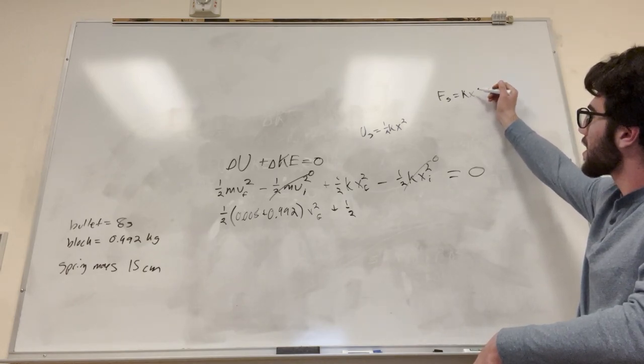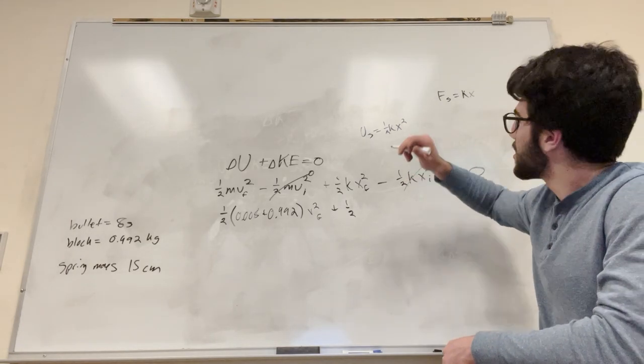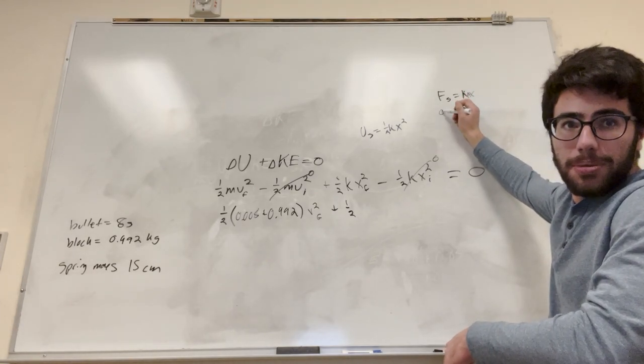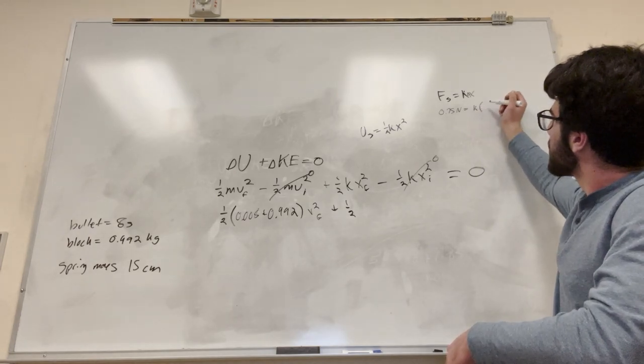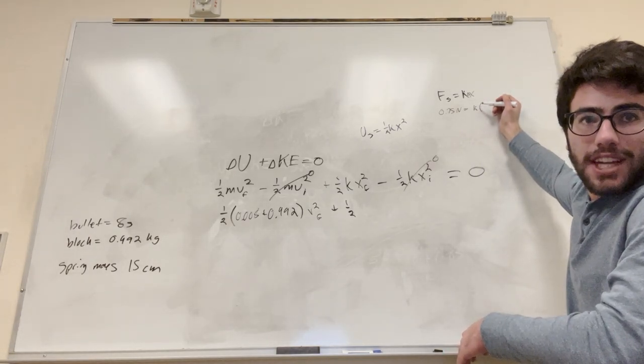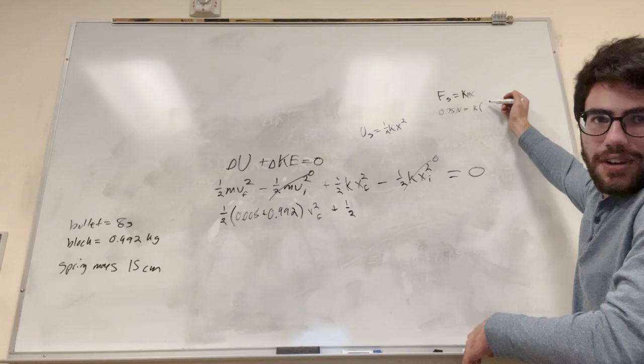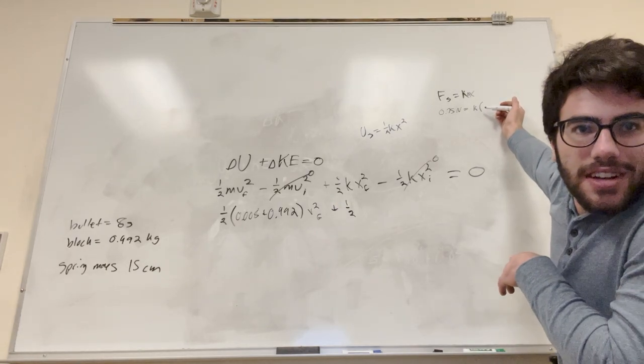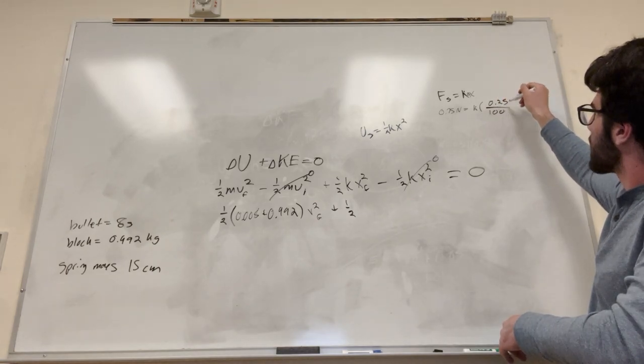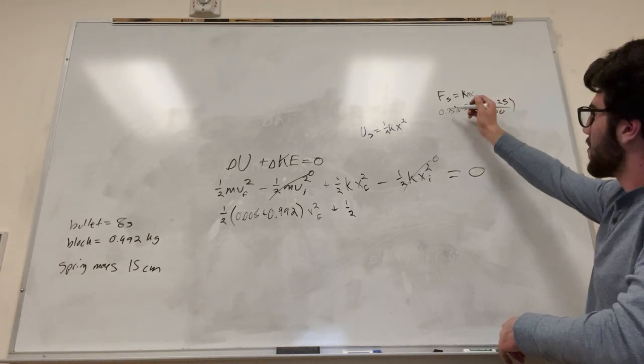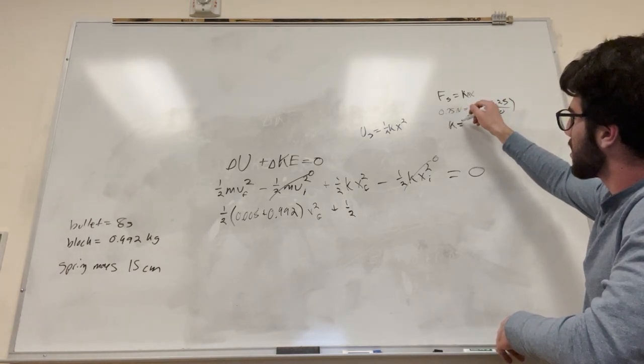So if it's 0.75 newtons equals the constant times the change in x which is 0.25 centimeters. But then if we're converting that to meters we have to divide it by 100. You're going to move this to the other side. You'll get the constant is equal to 300. Okay so moving that into here, 300.